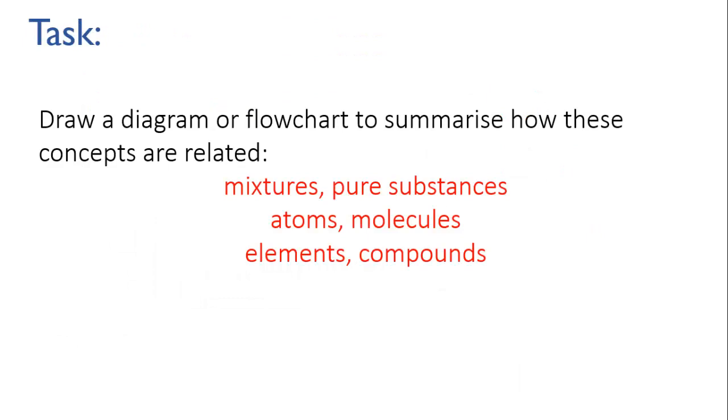So we've now distinguished pure substances and mixtures, atoms and molecules, and elements and compounds. Your task for this video is to draw a flowchart to classify substances that uses all of those six terms: pure substances, mixtures, atoms, molecules, elements, and compounds. There are many ways of doing a flowchart. Try to come up with something that makes the relationships between the six terms as clear as possible. See you next time.